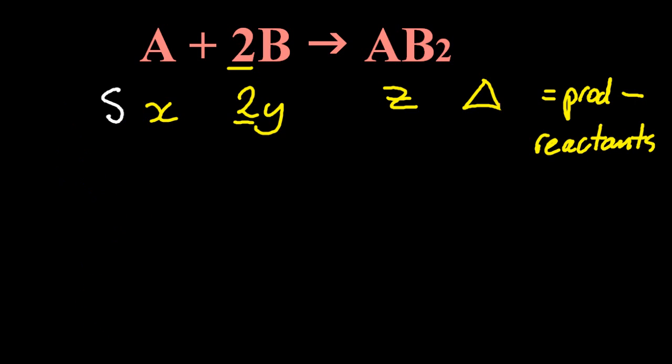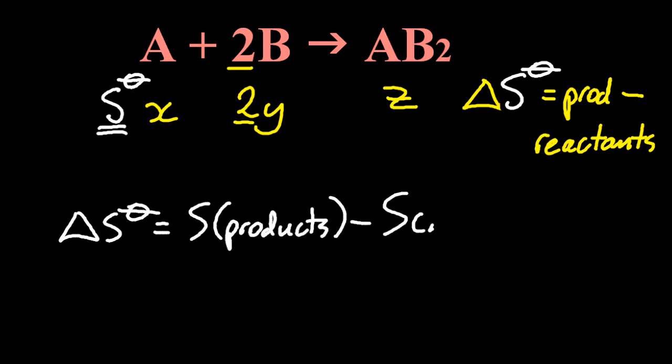And S, well it isn't actually delta S, it's S that we'll give you for the reactants and the products. But for the equation it is delta S, the change in entropy. So S is entropy, and delta S is the change in entropy. And it's that whole products minus reactants business again.